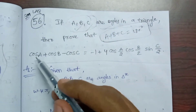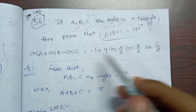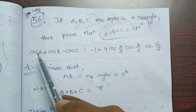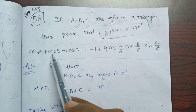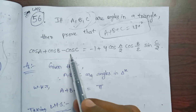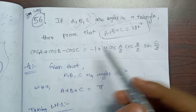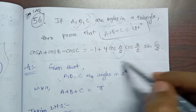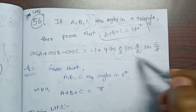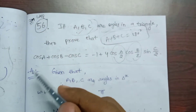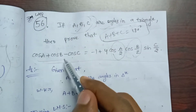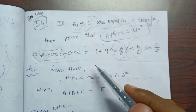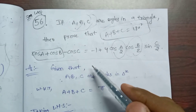We will see LHS here and RHS here. Choose LHS: cos A plus cos B minus cos C. We look at RHS. Here we have a formula to apply for cos A and cos B.